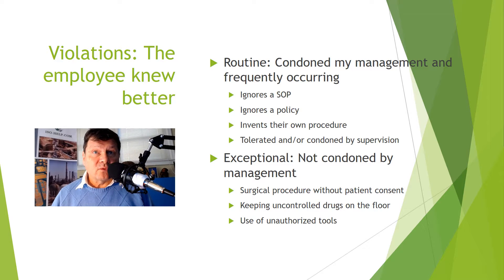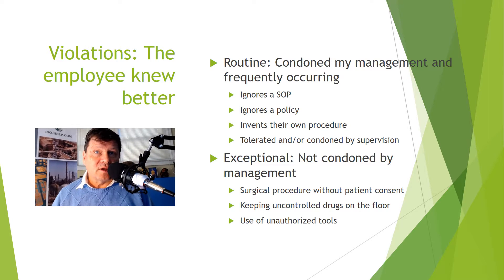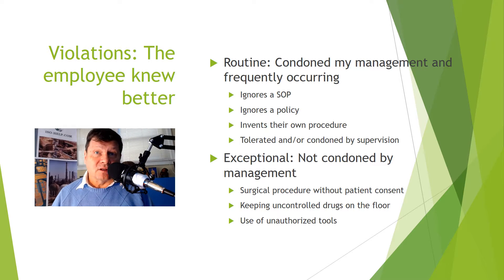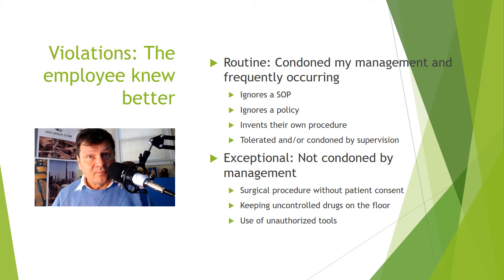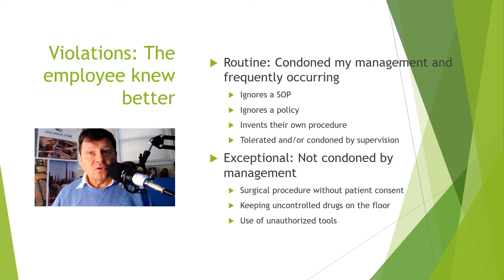The second type is a violation, of which there are two types: routine and exceptional. The difference is whether the situation was condoned by management or not. In a routine violation, an employee knows something is wrong and does it anyway — ignoring a standard operating procedure, or inventing their own procedure — and the violation is tolerated or condoned by supervision, often as a conscious decision. An exceptional violation is a lapse out of the ordinary that is not condoned by management. Examples include extending a surgical procedure without patient consent in medicine, or in manufacturing, using an inappropriate tool, adjusting equipment in an unauthorized way, or an unqualified employee performing a task.